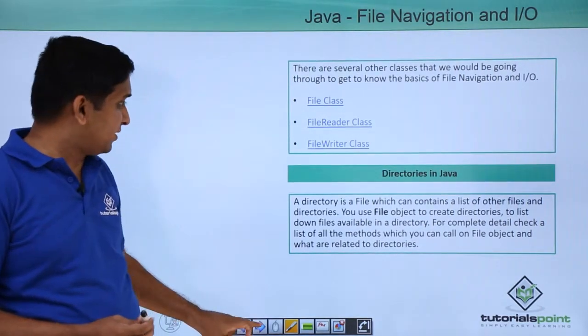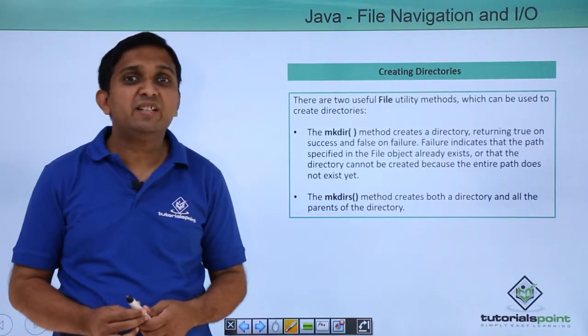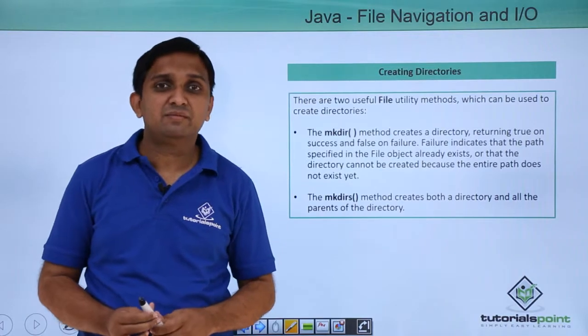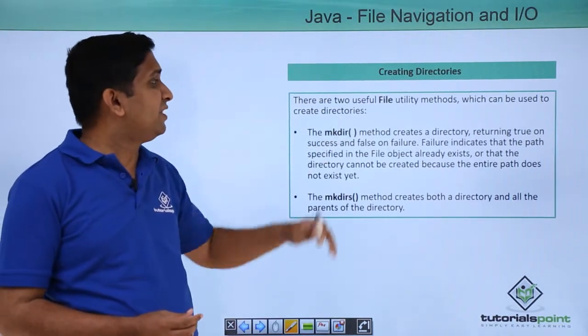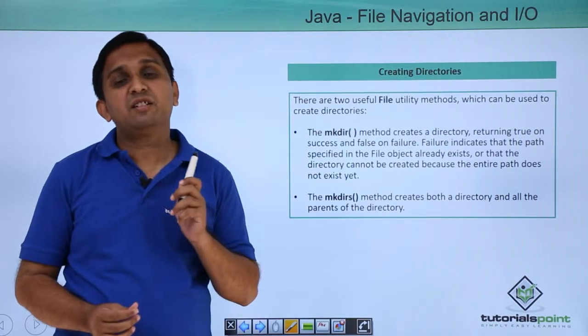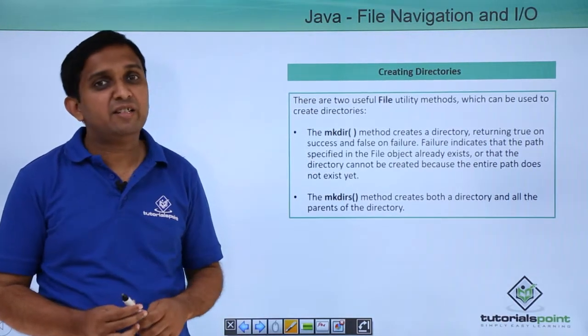So there are two methods which we can use to create directory. One is mkdir method, another is mkdirs method. The mkdir method will create a directory. It will return true if the directory is created successfully, otherwise it will return false.